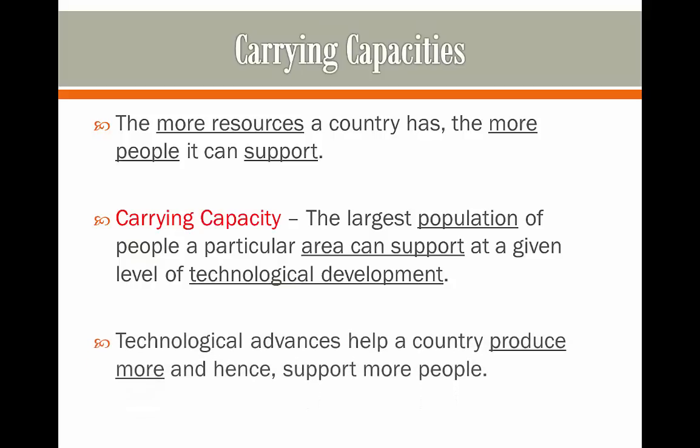Technological advances in a country produce more and more resources, which then allow more people to live. For example, if we look at a country such as the US, there are a lot of resources — a lot of coal and farming area — to be able to sustain a high population, and therefore the US has a really high population.